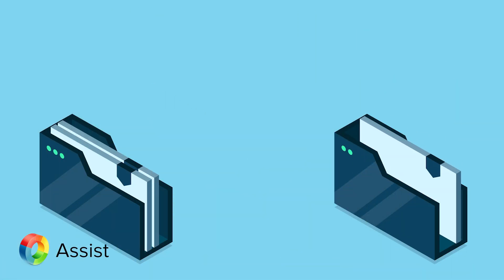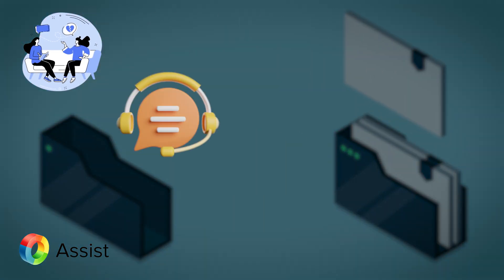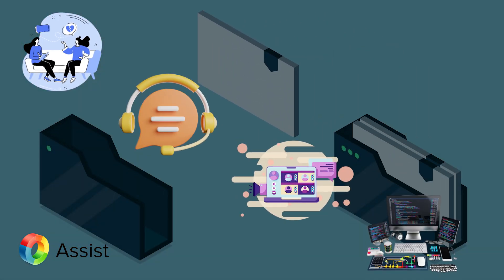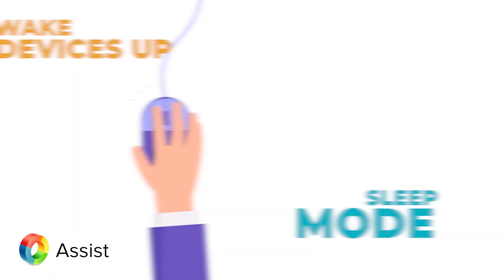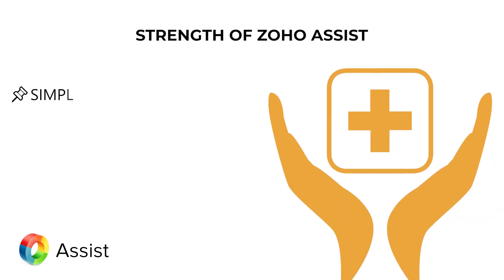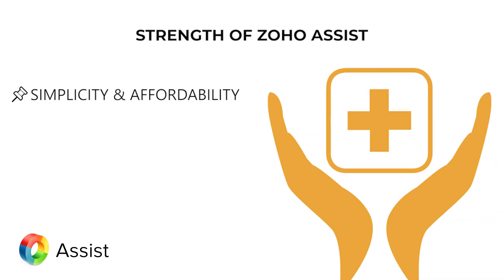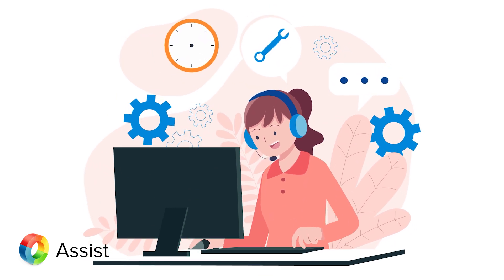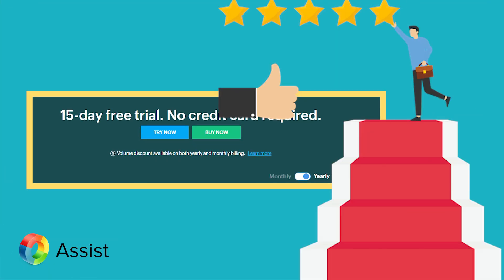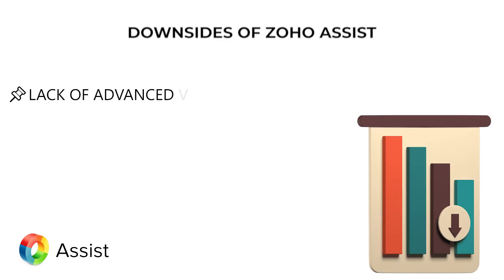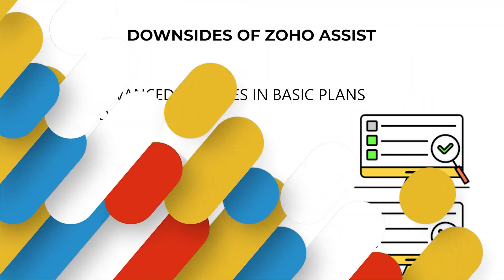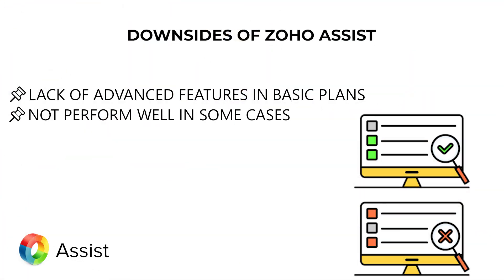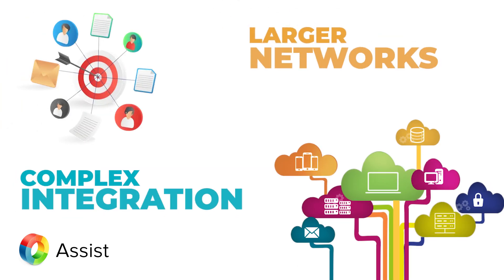Zoho Assist is loaded with features like file transfer during a session, live chat, screen sharing, and multi-monitor navigation. You can even wake devices up remotely if they are in sleep mode. Zoho Assist's biggest strength lies in its simplicity and affordability, making it perfect for small businesses and IT support teams. The free version is great for startups, but the lack of advanced features in basic plans may require larger organizations to upgrade. It might also struggle with complex integrations and larger networks.